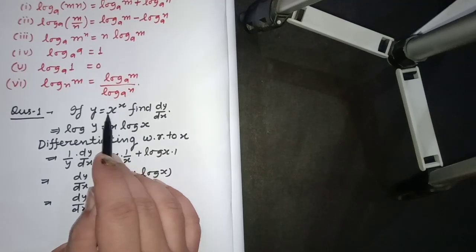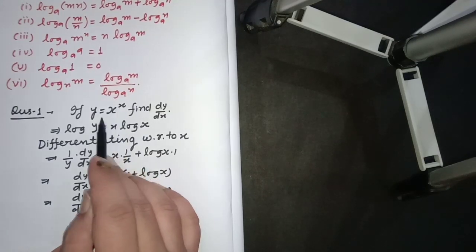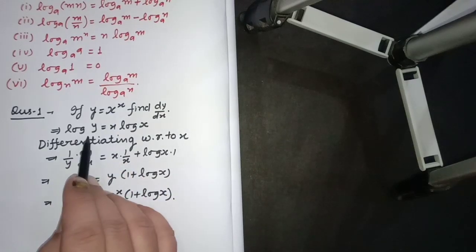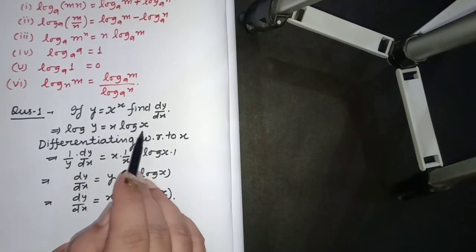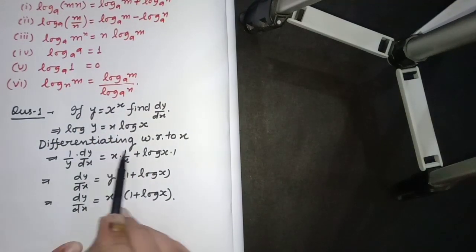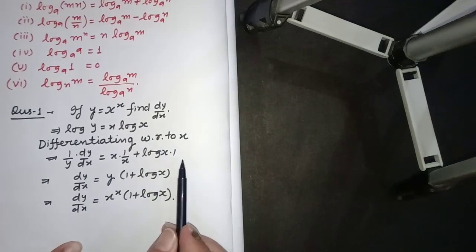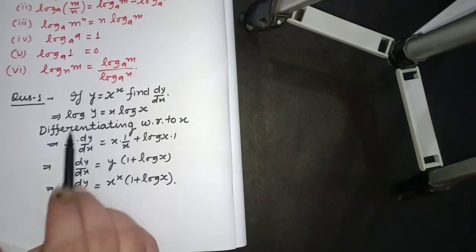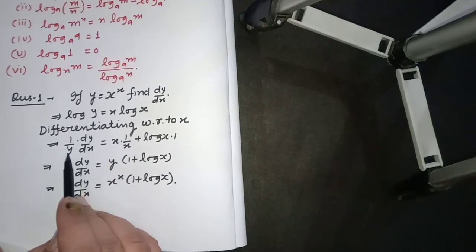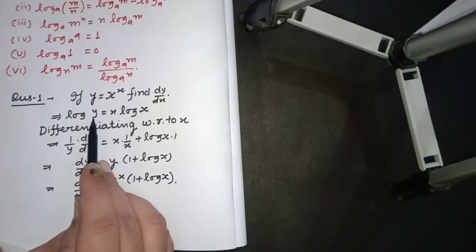Taking log, log y will be x log x by the property. Now differentiating with respect to x: log's differentiation will be 1 upon y, and y with respect to x will be dy by dx.